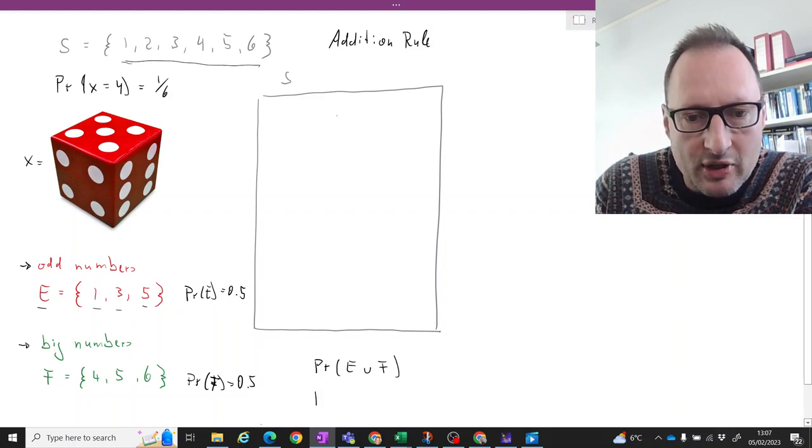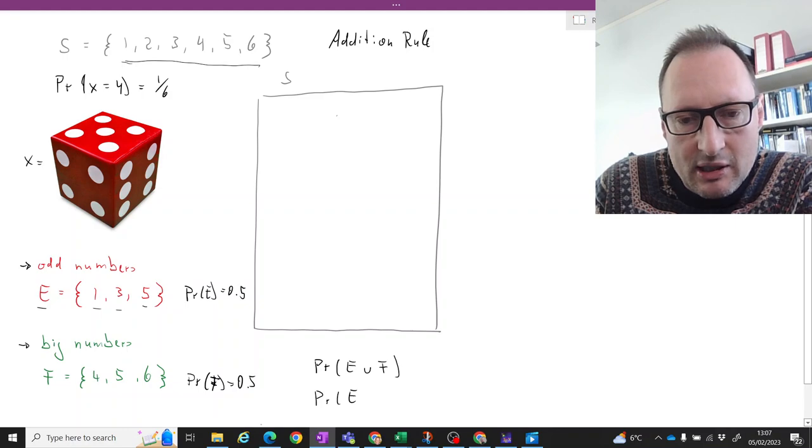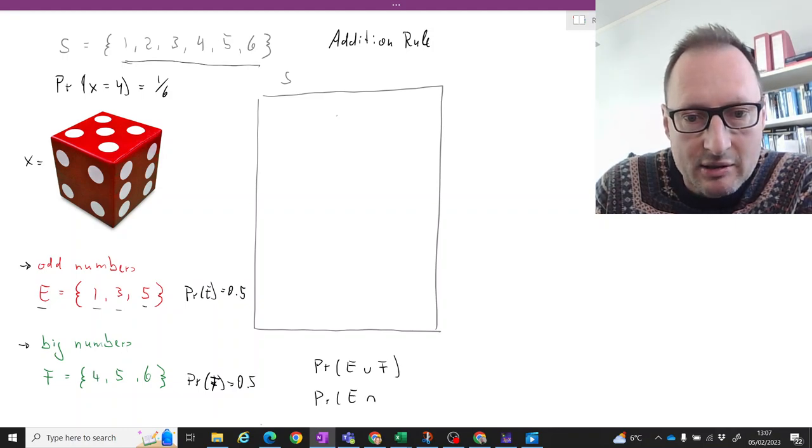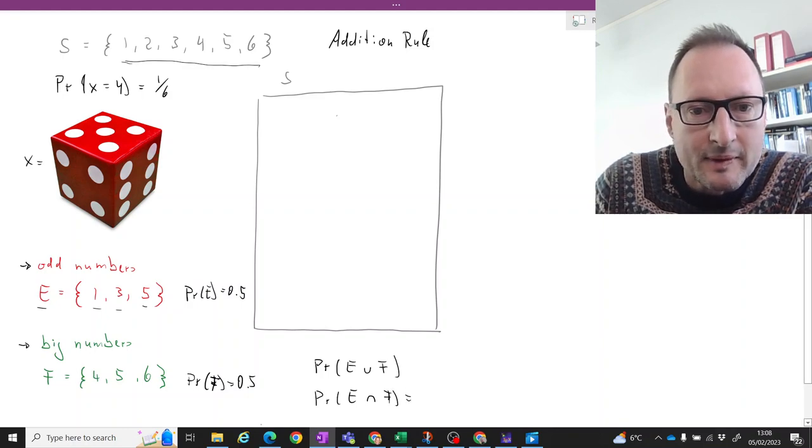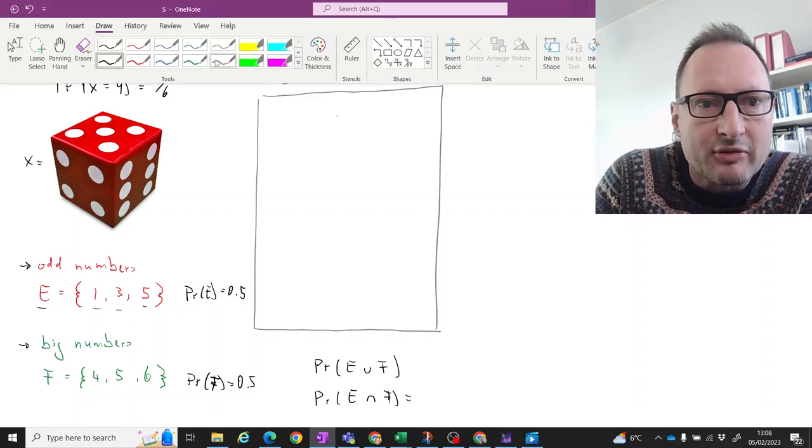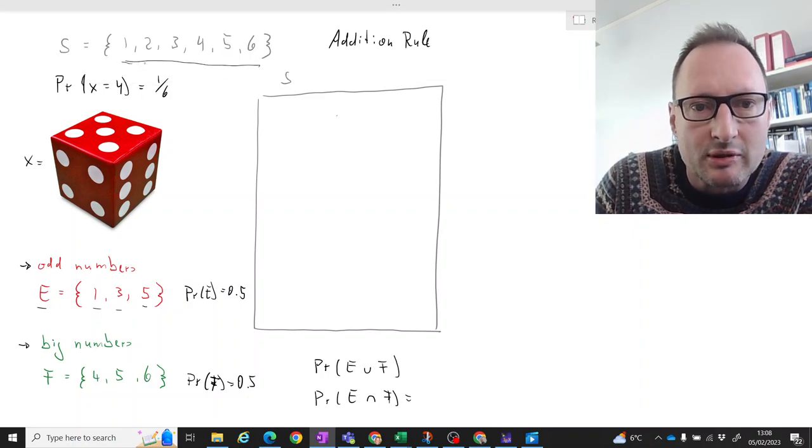Let's also think about the probability that the outcome is odd and big. In fact, let's start with that latter. Let's firstly graphically represent our two events in the event space.